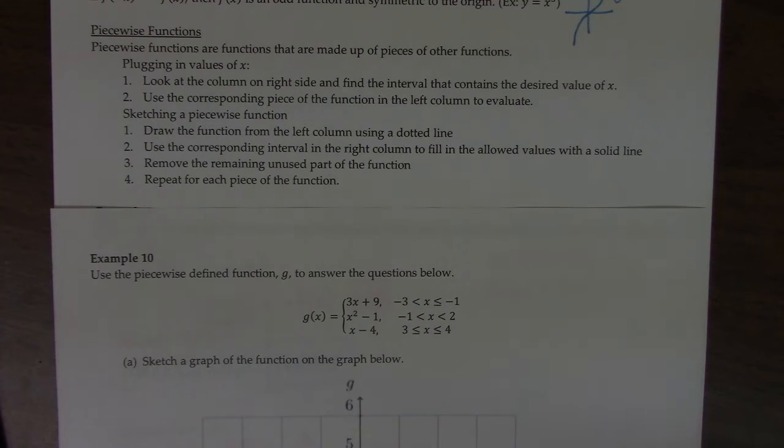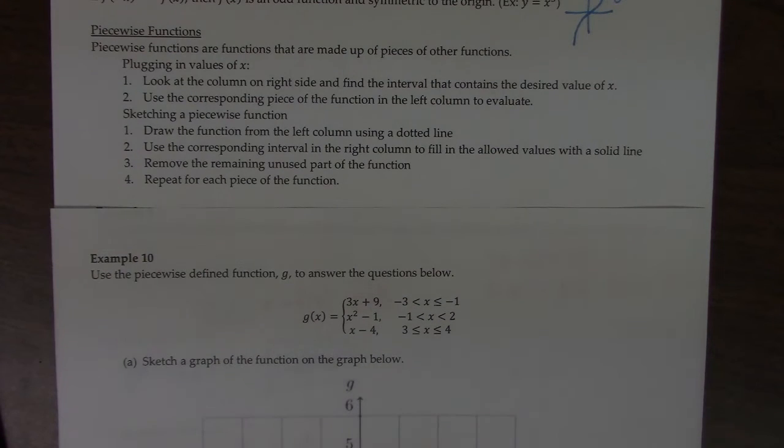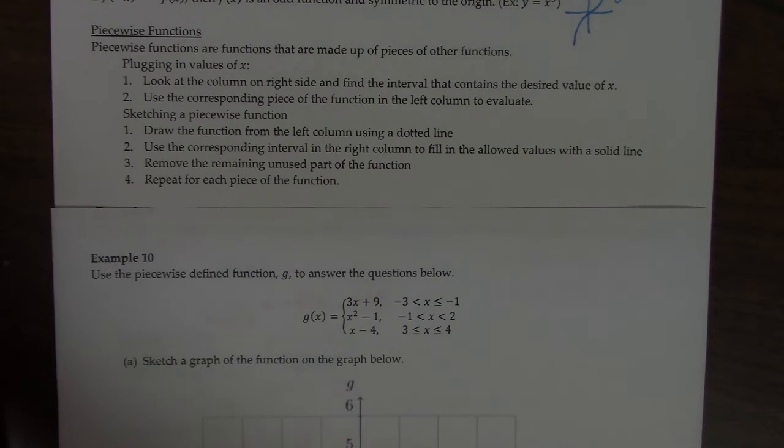If we want to draw a piecewise function, we start in this column, we start with the first equation, and we draw it lightly with a pencil or a dotted line. Then we look at the interval, and this would be from negative 3 to negative 1, and we only shade or make the line nice and solid for those values. Then we lightly erase everything else. Then we draw the next piece, and then we crop off the values we don't need and the next piece. So I recommend using a pencil, and then you can use a pen or marker to color in the pieces you want to keep.